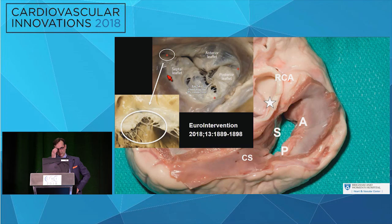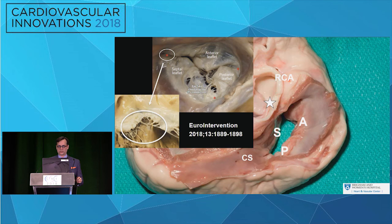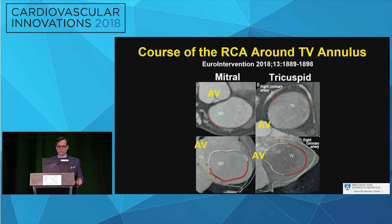The tricuspid valve is much thinner and easier to tear. The coaptation line between the septal and anterior leaflet tends to be the longest and is one where we place clips most consistently — just like in the mitral valve. The chordae tend to increase in number and density as you move toward the commissures in any of these leaflets, so there's lots of space to maneuver in the middle but much more dense chordae at the commissures, which can be an important marker when placing clips.